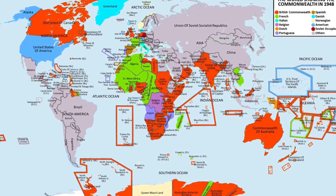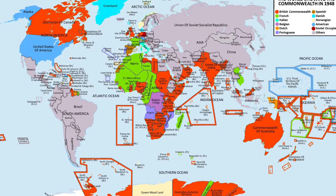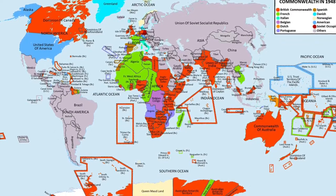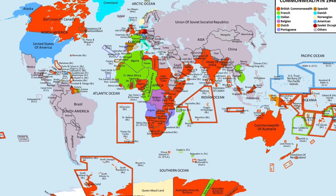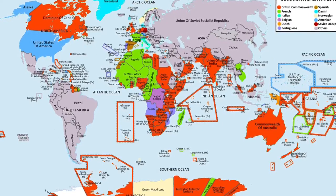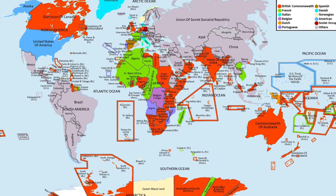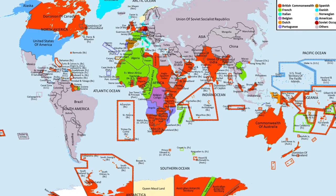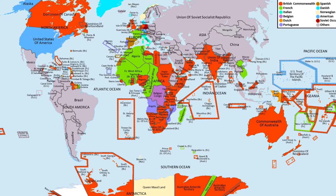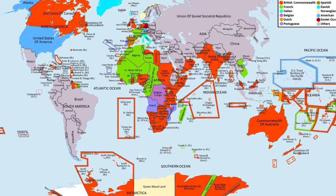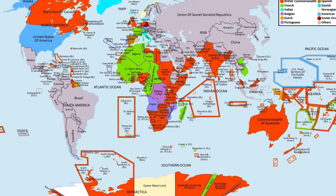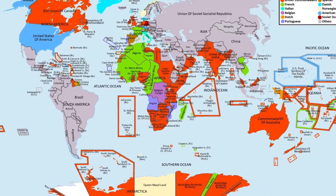All of the countries marked in red were part of the British Commonwealth, meaning the people who lived there were British citizens and had the right to live and work in Britain if they wanted to. They are spread far and wide across the globe. We're particularly looking today at the group of islands of the West Indies — places such as the Bahamas, Barbados, Jamaica, and Trinidad and Tobago.